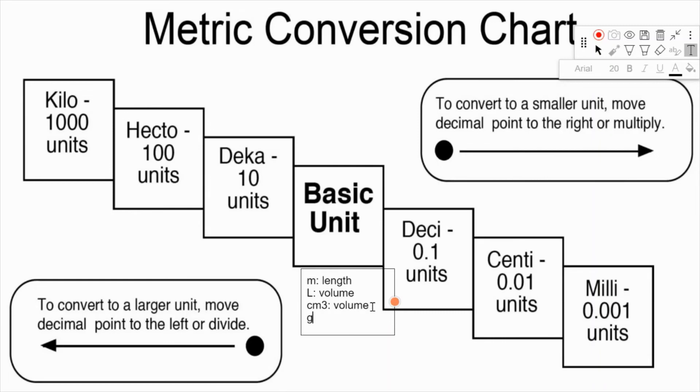We have meters for length, liters for volume, centimeters cubed also for volume, grams for mass, and seconds for time. With all these - kilo, hecto, deca, basic, deci, centi, milli - you just add one of these letters to it. If it's a kilometer you put a k there, if it's a milliliter you put an m there, and you switch it up for whatever unit you need.